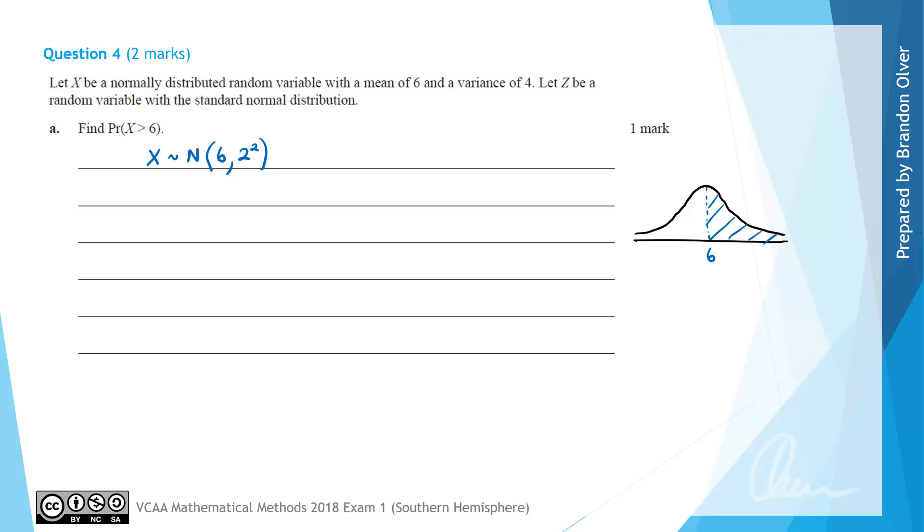By symmetry properties of that bell shaped curve, we know that the probability that X is greater than 6 is going to equal one half or 0.5. So that is the answer to part A of this question.